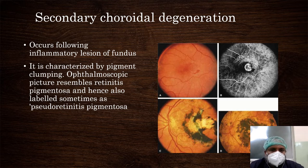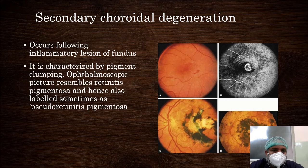Secondary choroidal degeneration occurs following inflammatory lesions of the fundus. It is characterized by pigment clumping and atrophy of the RPE. Hence it is known as pseudo-retinitis pigmentosa.